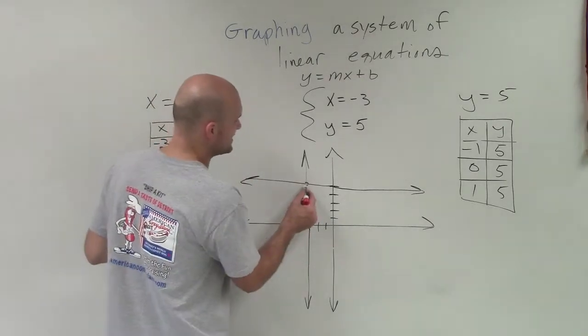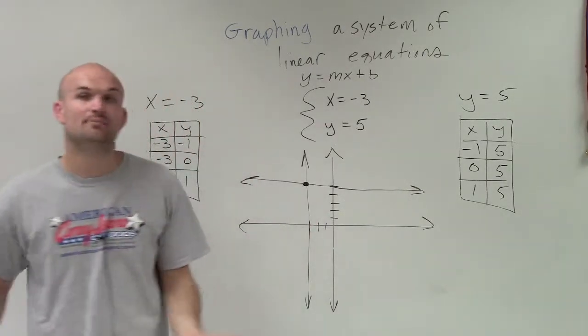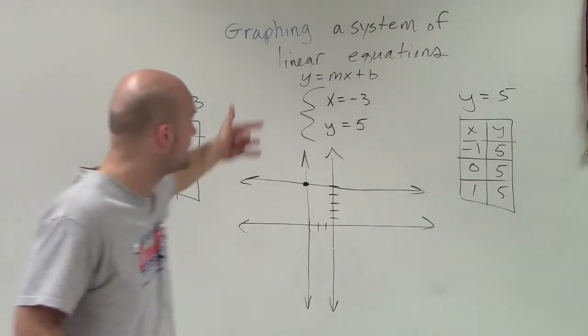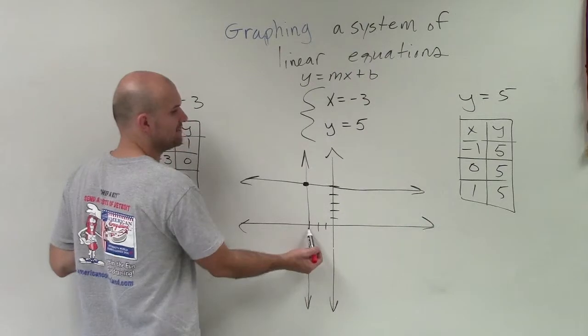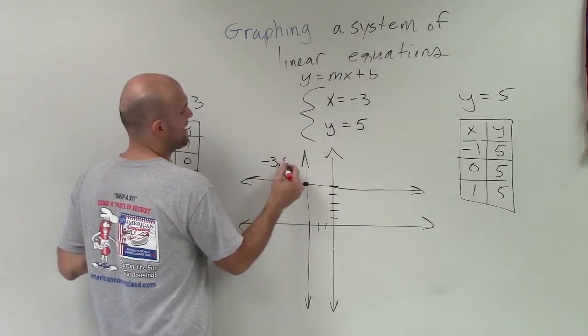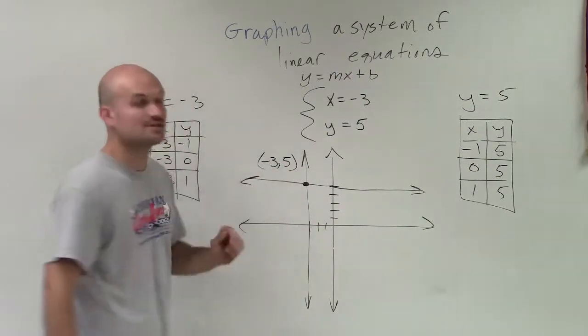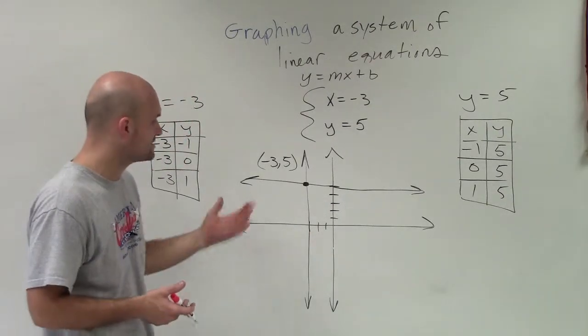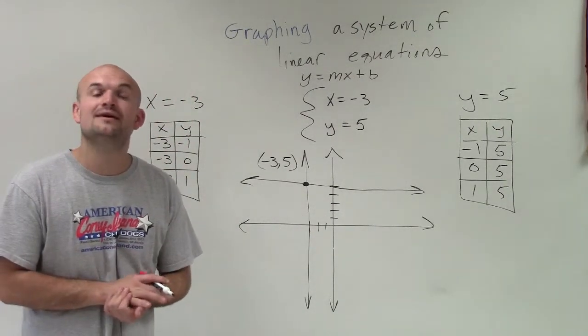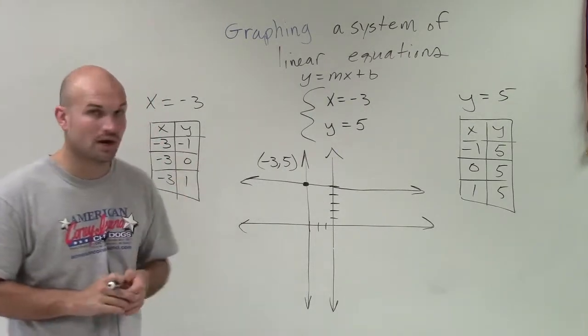These intersect at exactly one point, and that is the solution of these two equations. We need to determine this point. The x value is negative 3, the y value is 5. Since we have a solution, we have a consistent linear system, and it is independent since there is only one solution.